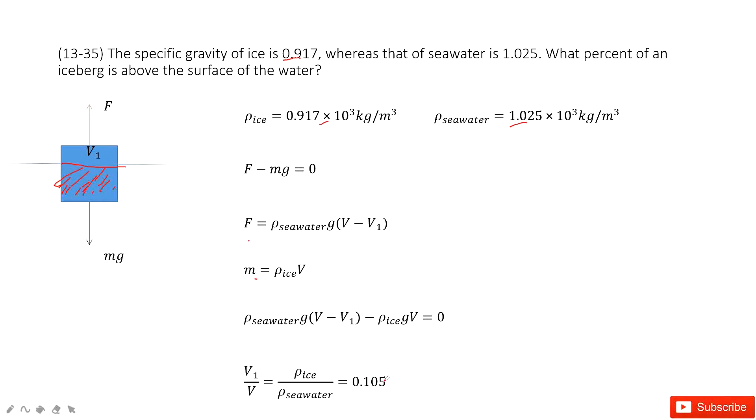Now we can solve this equation. Get the ratio for v1 over v is just this part - 0.105, around 10% of iceberg is above the surface of the water.